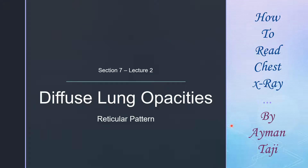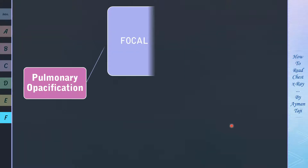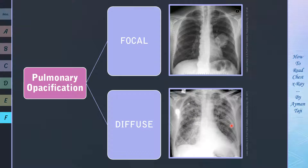Hello again. Now that you've assessed lung volumes, you finally have to assess lung fields. So let's say that you see an opacification, i.e. lungs are more opaque than normal. The first question to ask yourself is whether it's focal or diffuse. In the next three lectures, we'll discuss diffuse lung opacification, then we'll move on to focal ones, so let's get started.